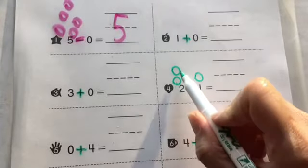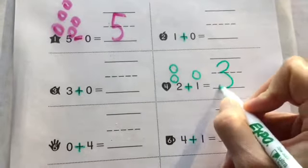And then we have one. So two plus one is one, two, three. Two plus one is three.